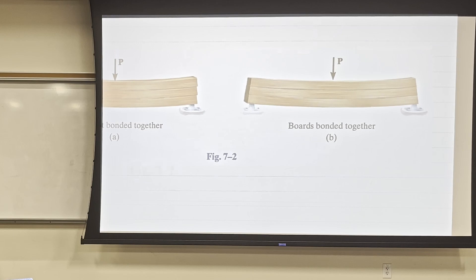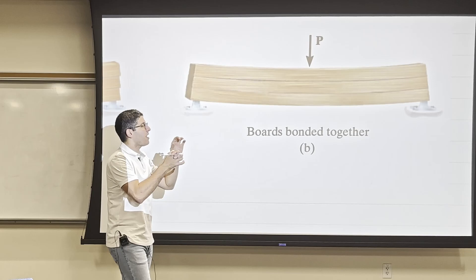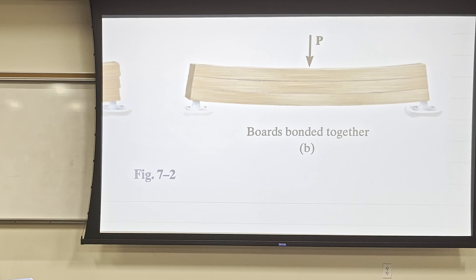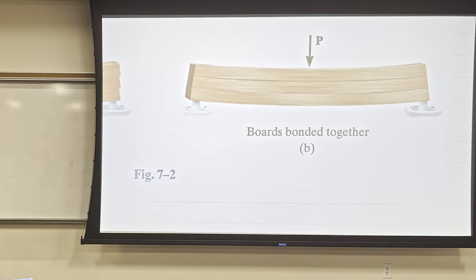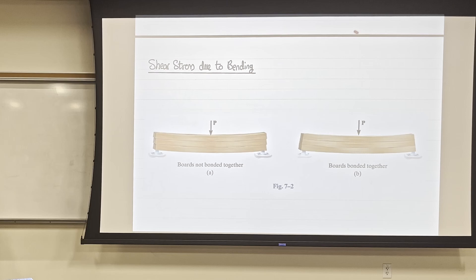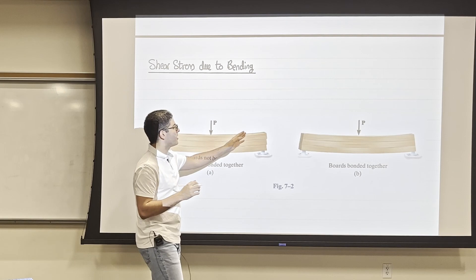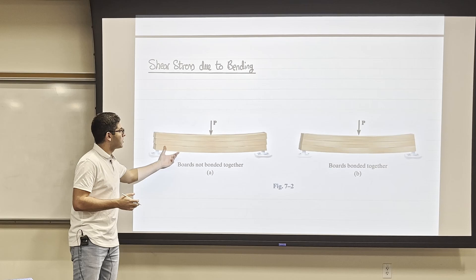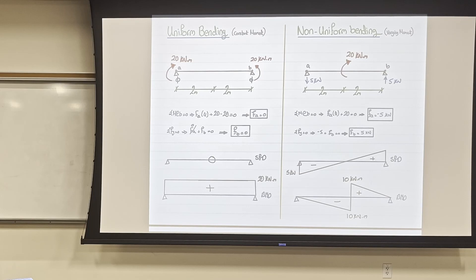But if we glue the layers together or add a fastener or bolt inside, the beam behaves as one unit. When all layers share a common center of curvature, the beam is acting as one unit and is much stronger than when the layers slide independently.